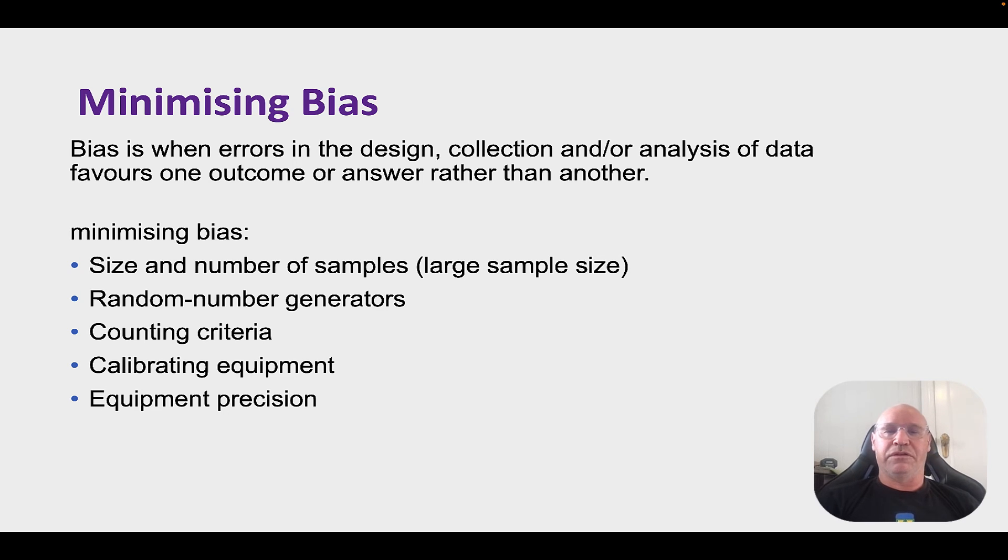Okay now bias is a real big issue with sampling because we're not sampling the whole thing. So we need to try and design, collect and analyze our data in a way that doesn't favor one outcome or answer rather than the other. So a classic example would be you're doing random sampling, you've got your quadrat and you walk down to your ecosystem and you think this looks like an interesting spot and putting the quadrat down there. Or rather thinking oh there's too much to count there, I'm going to put it down here because I'm lazy. Well that's a bias because you're favoring one outcome or another. So to minimize this you need to have a large sample size, as large as you can. Be really strategic about how you and predetermine where you're going to put your transect lines and your quadrats. Use random number generators. Have a criteria for counting. Ensure the equipment you're using is calibrated and that you're aware of the precision, the limit of precision of your equipment as well.